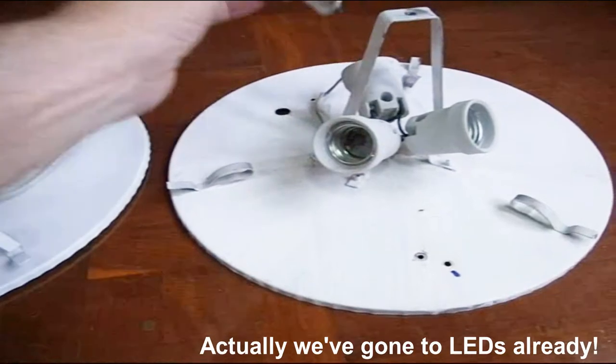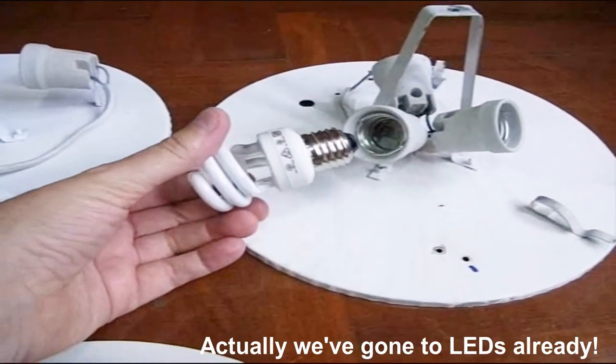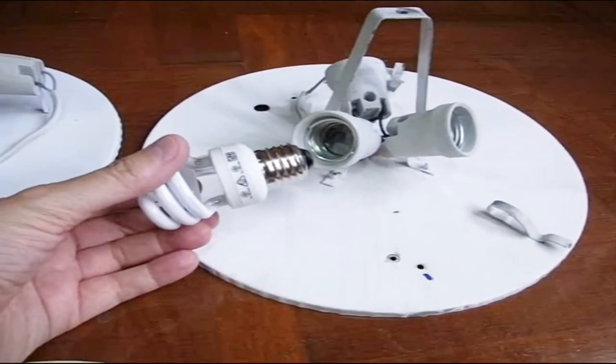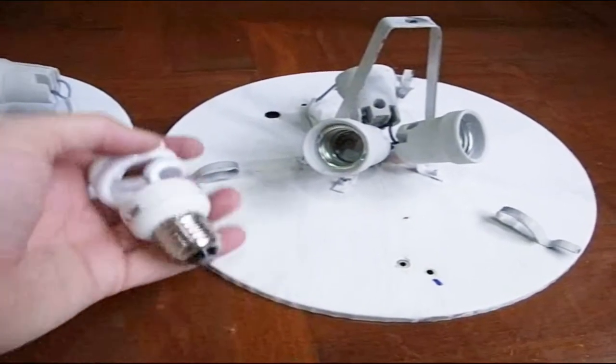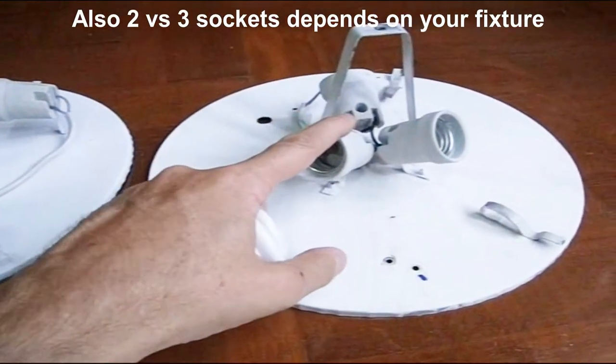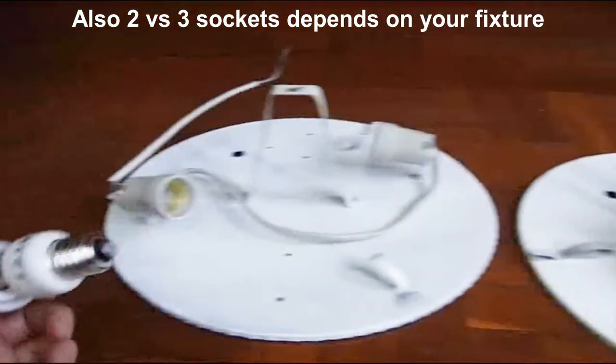You can see there are 3 sockets here. The reason to go to this is because it's brighter, cheaper, and available. These circular tubes are no longer easy to find. The reason I did 3 and then went to 2 is when I first started this process, 3 twelve watt bulbs were cheaper than 2 eighteen.